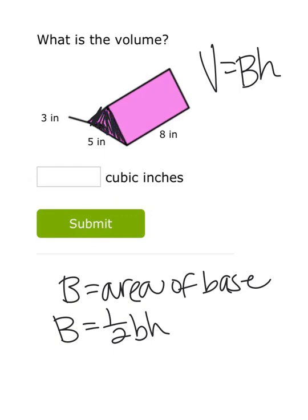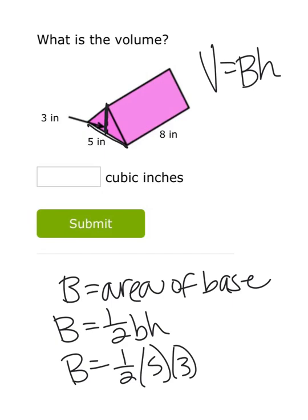We're only looking at this triangle right here. We're not looking at the height of the whole prism, we're only looking at the height of the triangle. So let's calculate the area of that. I know that the base of this triangle is 5 and the height is 3. So one-half of 5 times 3, one-half of 15 would be 7.5.